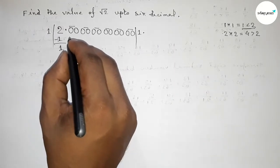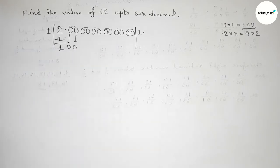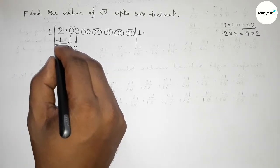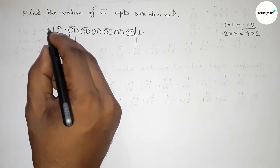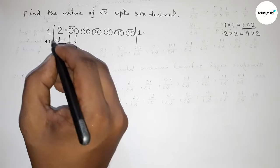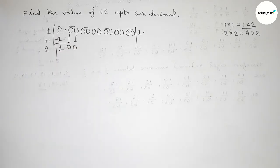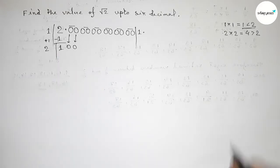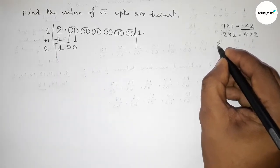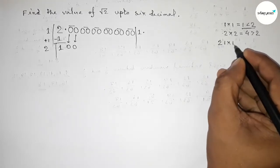Write down 00 (bring down the next pair of zeros) and draw a division line. Adding 1 with 1 gives 2. Now we have to put a number beside 2 and multiply by that number. If you put 1 beside 2 and multiply by 1, that gives 21.